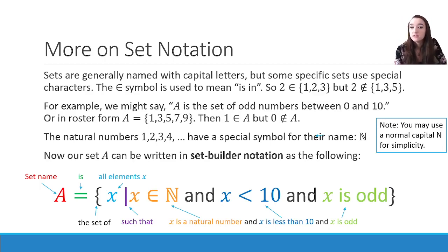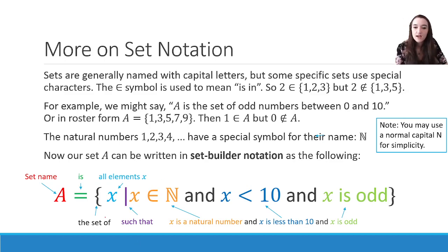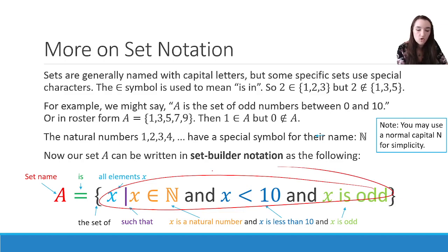Our set A can now be written in set builder notation as follows. A equals — which we read as 'is' or 'the set of' — {x | x ∈ ℕ, x < 10, and x is odd}. Reading it verbally: 'A is the set of all elements x such that x is in the natural numbers, and x is less than 10, and x is odd.' All three of these are conditions on x, so we take all possible x values that fall under those conditions. That is set builder notation.